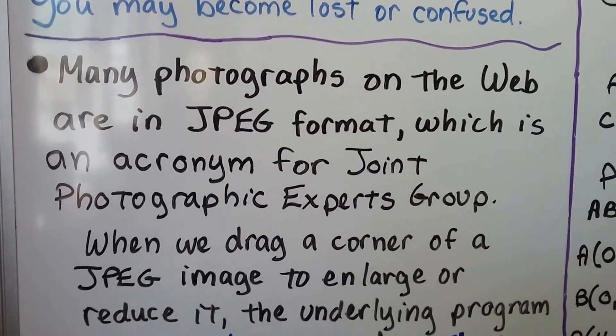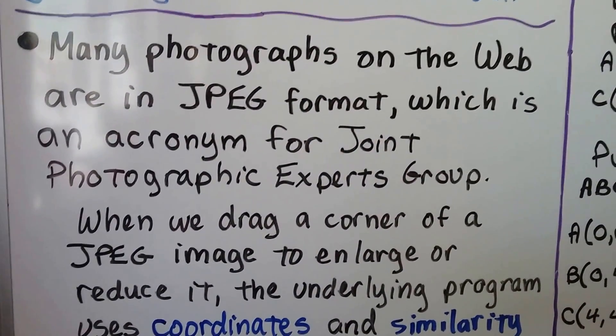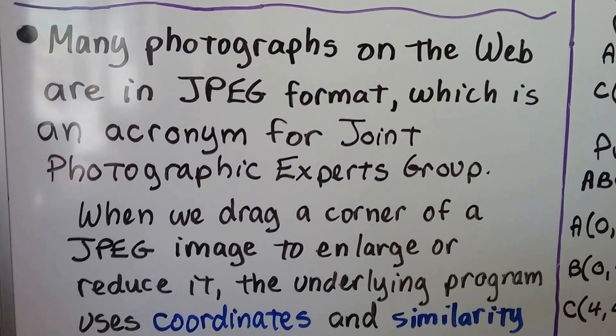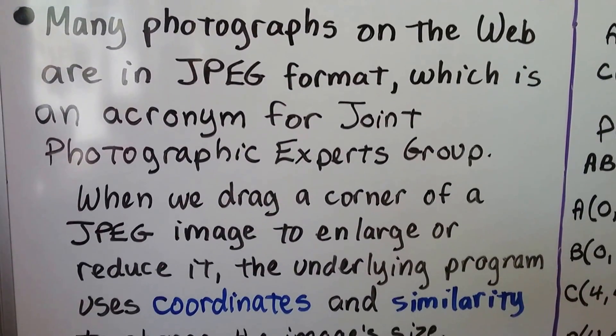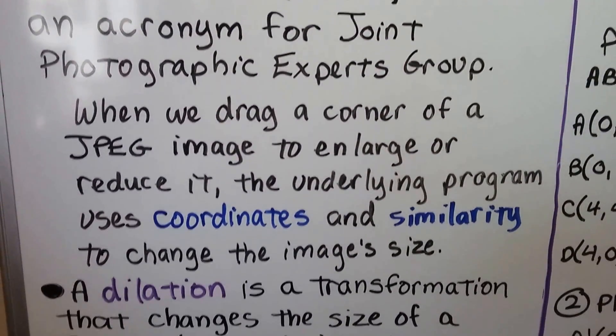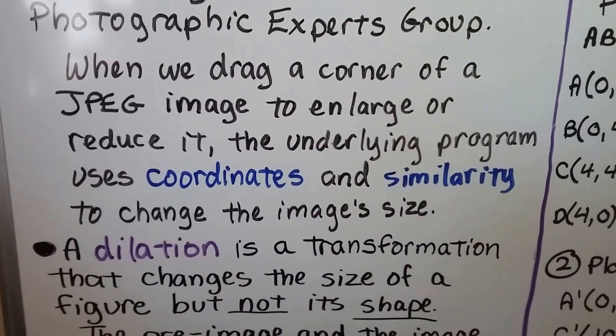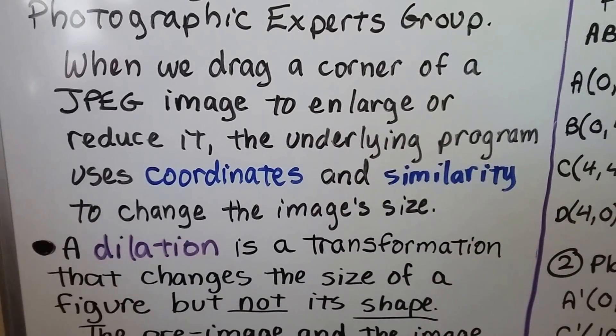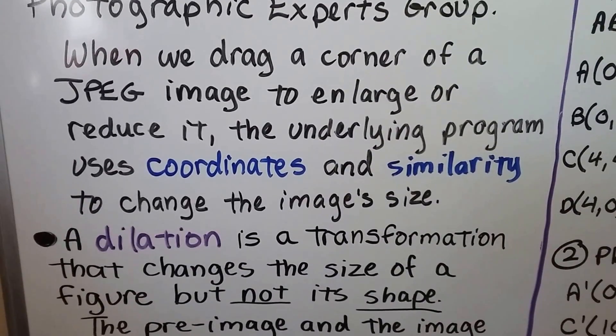Many photographs on the web are in JPEG format, which is an acronym for Joint Photographic Experts Group. When we drag a corner of a JPEG image to enlarge or reduce it, the underlying program uses coordinates and similarity to change the image's size.